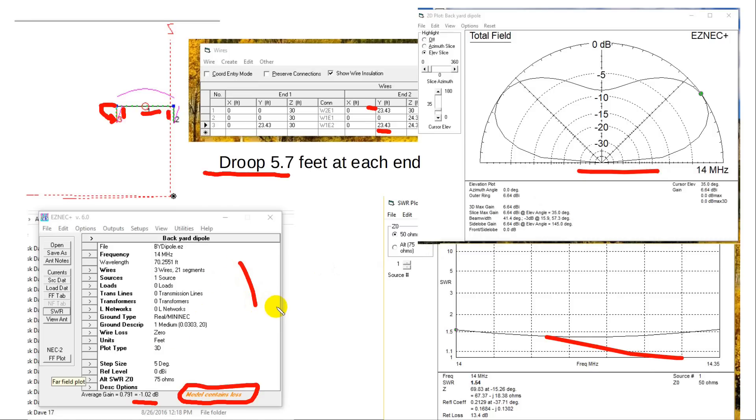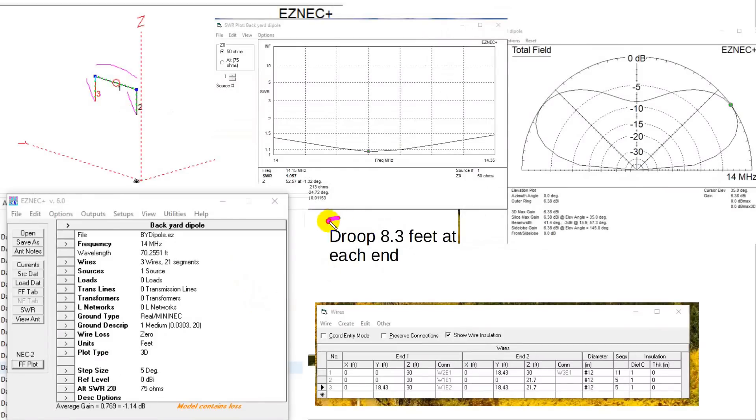All right, let's take a look at the next case now. We're going to droop some more. Droop by 8.3 feet at each end. And you can see it here. I've offset it a little bit so that it kind of moves the z-axis over a little bit. But we still see that we get radiation in there, get a nice SWR across the band, good pattern. And now the top of the antenna is less than 19 feet across.